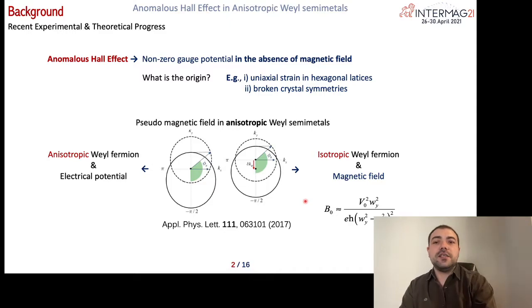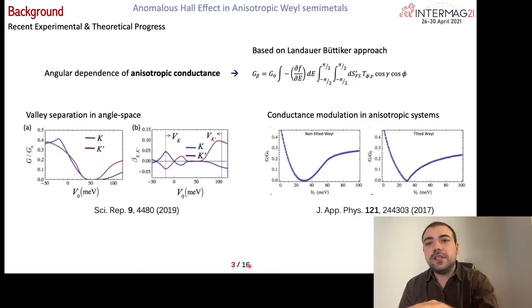As you can see from the figure, the Fermi surface orientations of a junction with different potentials are very similar for anisotropic Weyl fermion under electrical potential and isotropic fermion under magnetic field. And we further investigated this effect and utilized it for valley filter and the conductance modulation applications in these previous published studies.